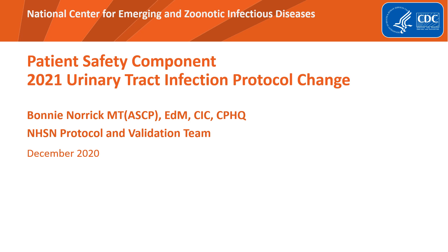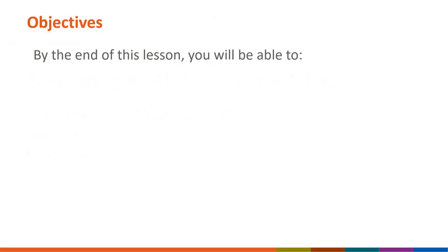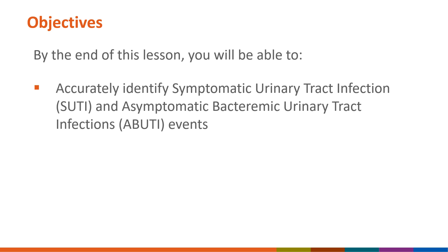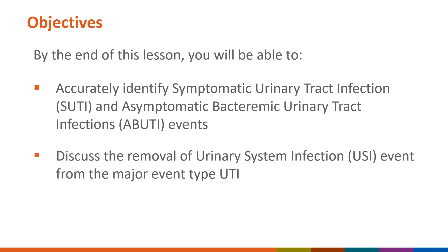Please visit the NHSN website to view the full chapter. By the end of this lesson, you will be able to accurately identify symptomatic urinary tract infection, or SUTI, and asymptomatic bacteriuria urinary tract infections, or ABUTI events, as well as discuss the removal of the urinary system infection, or UCI event, from the major infection type UTI.